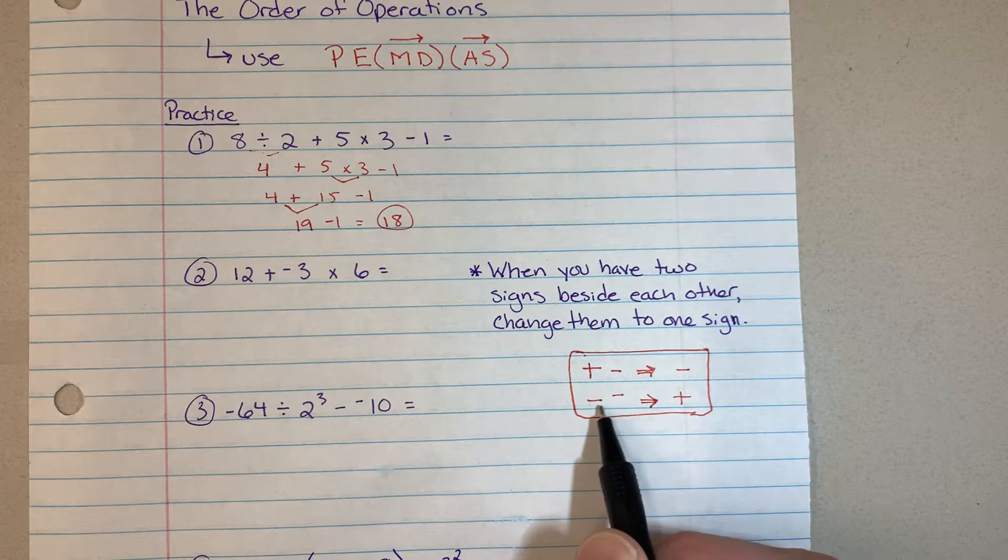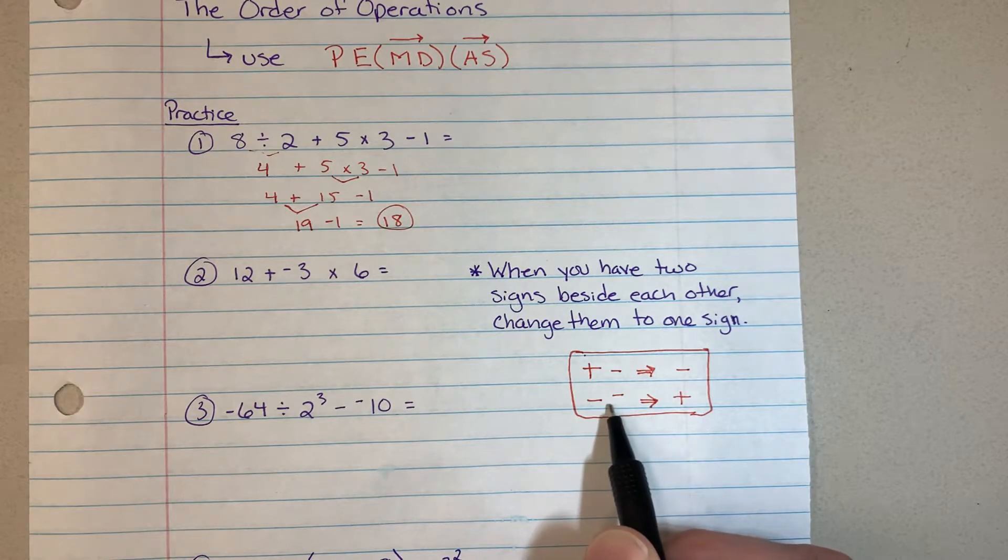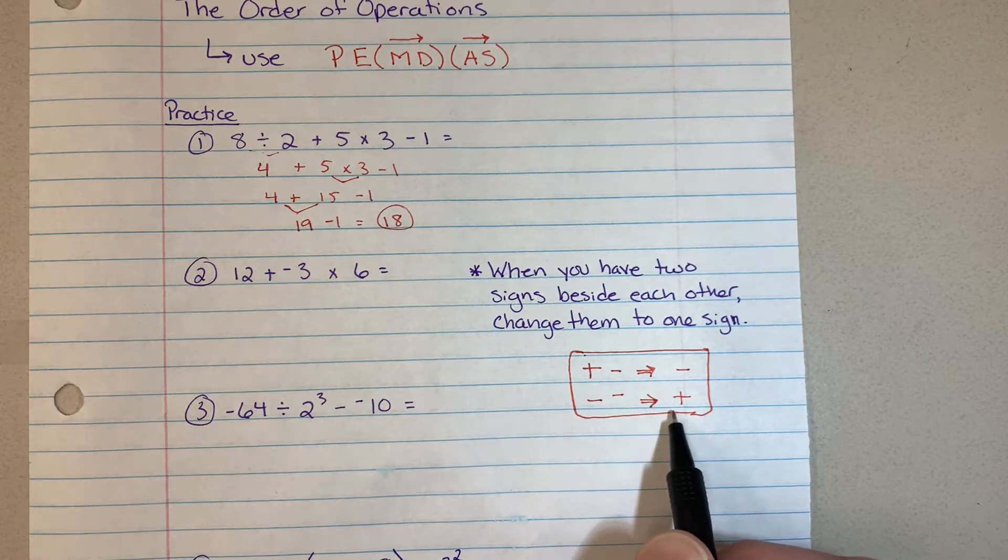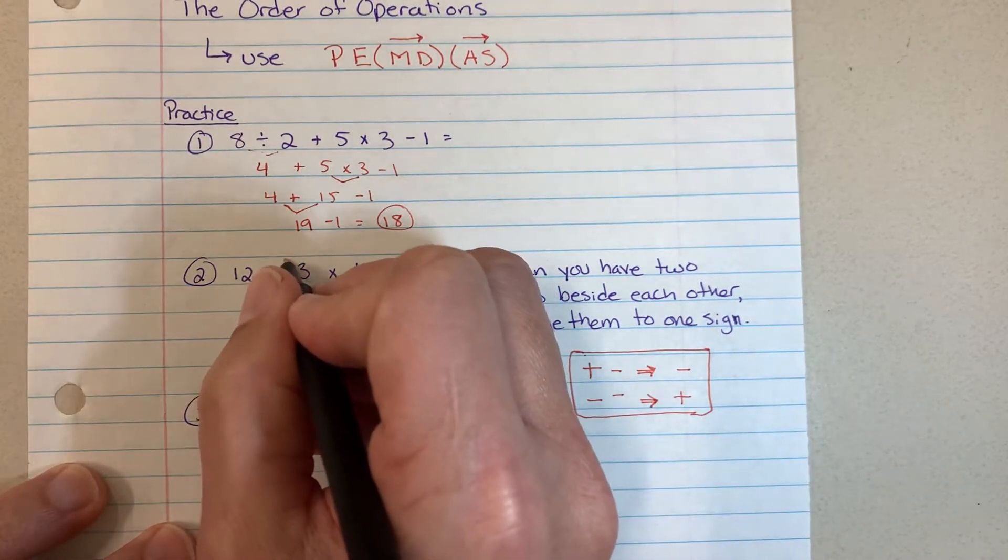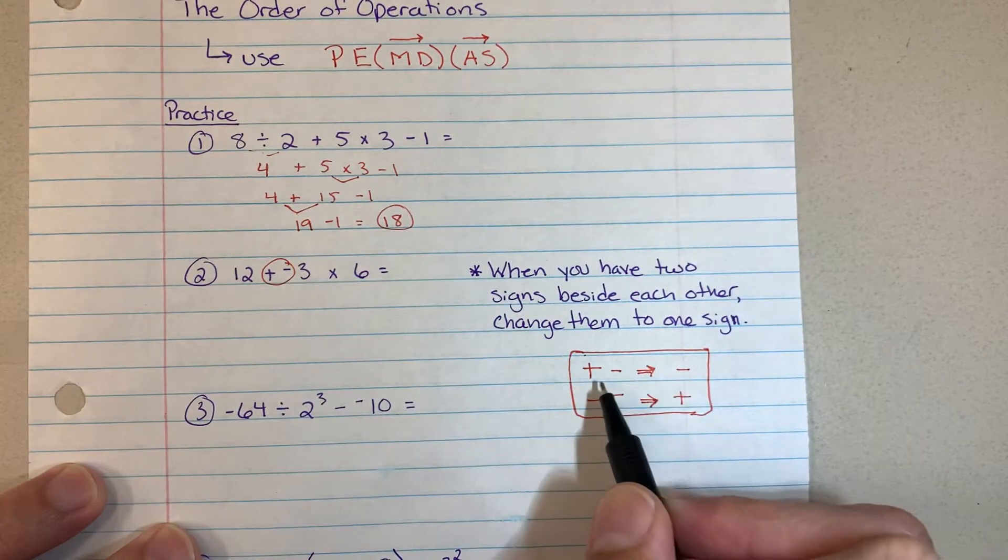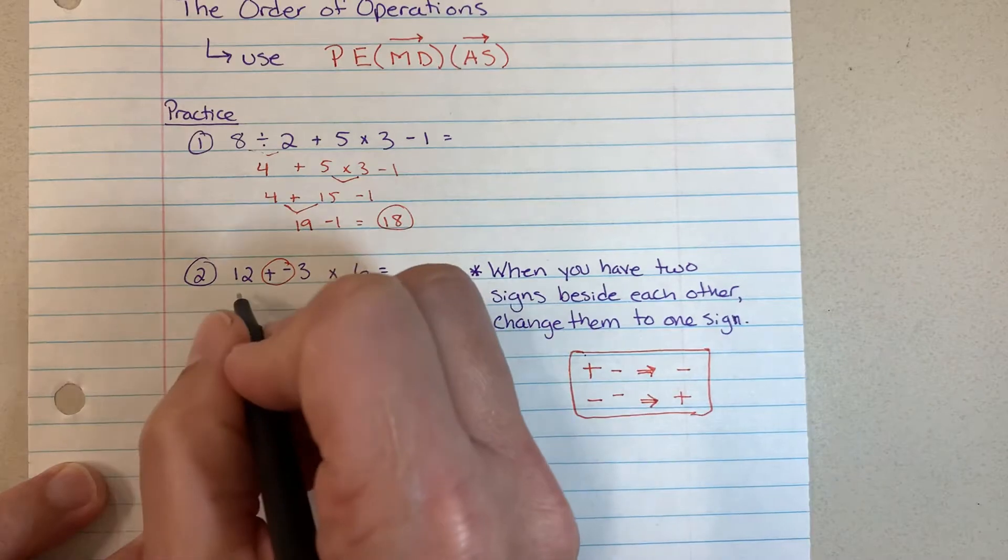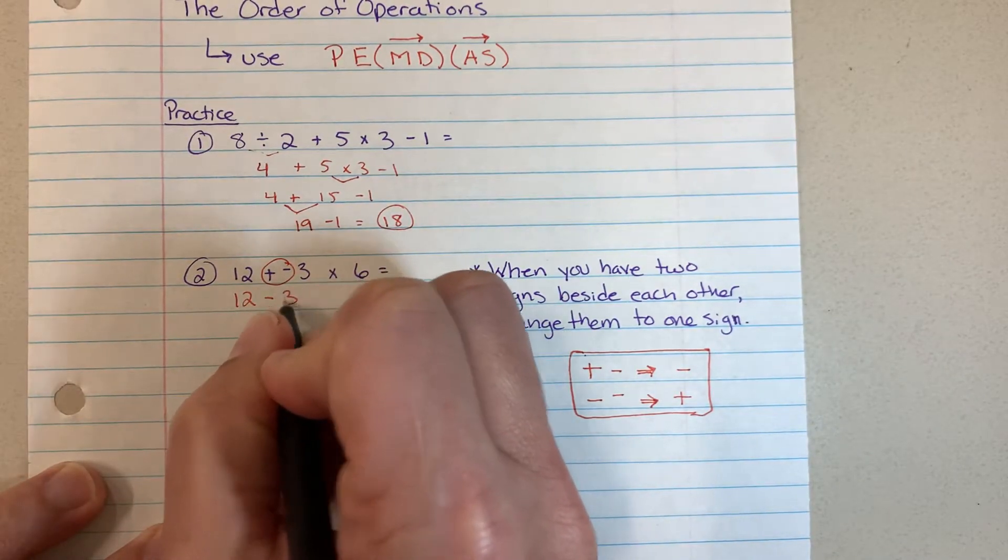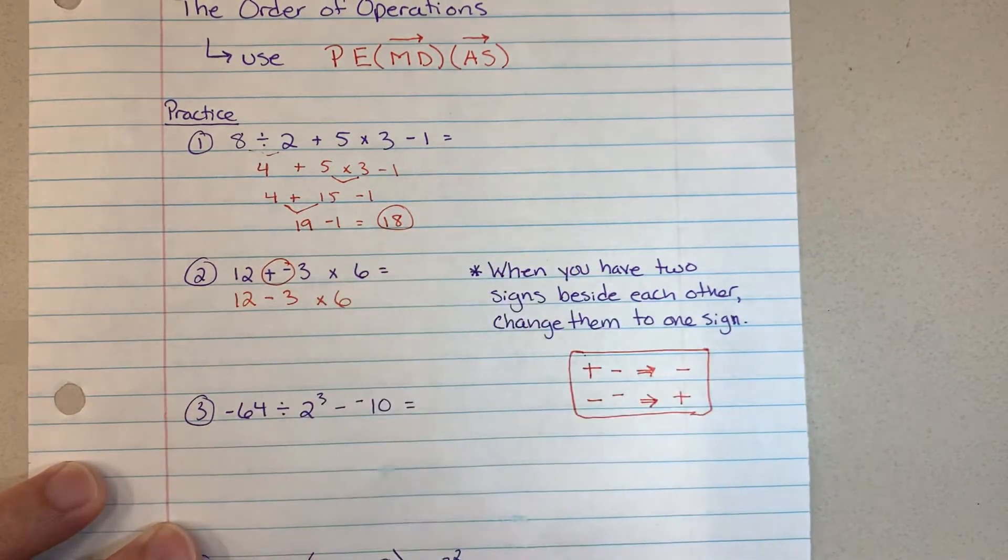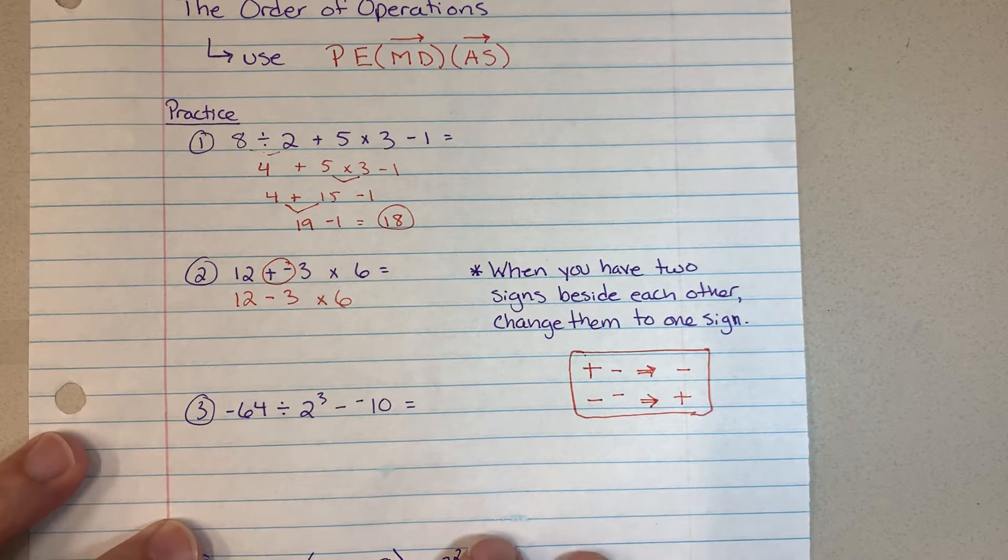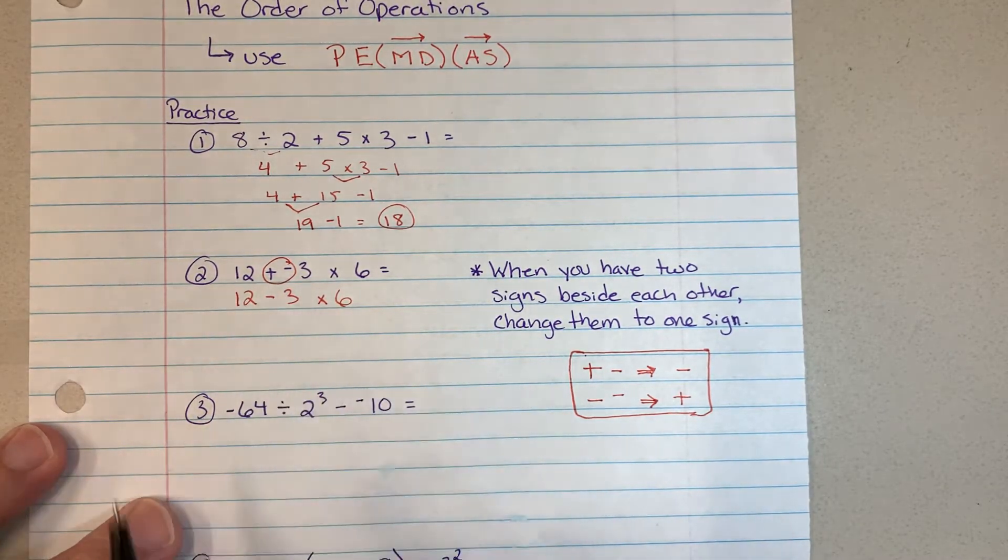But if they're both of the same sign, if they're both minus signs or both negative signs, then you're going to change it to a plus. So right here, we want to change that to a minus sign. 12 minus 3 times 6. Now we can go ahead and work out our problem without any confusion of the double signs.